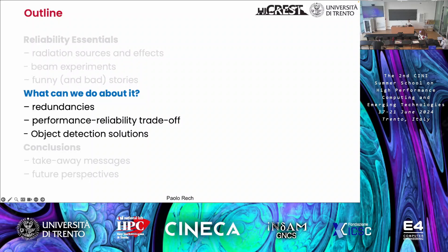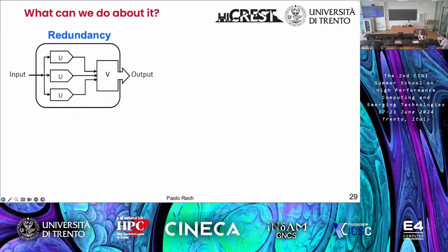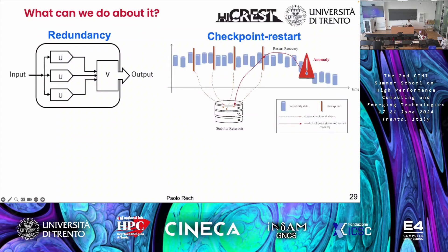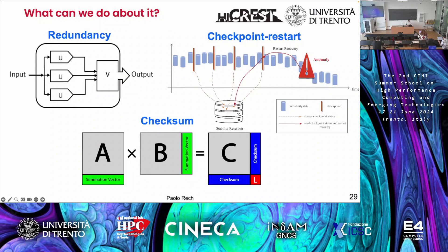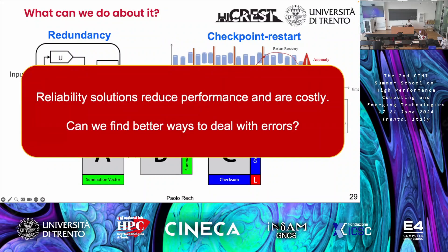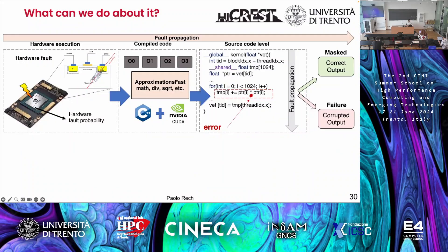How can we deal with this? As I mentioned, reliability is easily solved — you just triplicate everything, like in airplanes or satellites. There's a tiny problem of cost. Or you can use checkpoints, saving the whole state of your system periodically and rolling back if something goes wrong. Or you can add checksums to your application. The problem is that all these solutions are costly — either in time, in performance, or in money. So is there a better way?